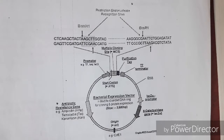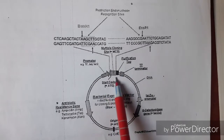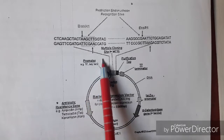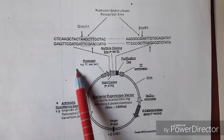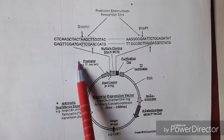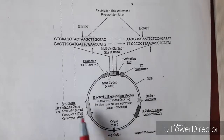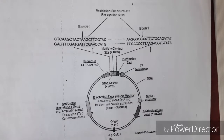Now looking at the diagram of an expression vector: the multiple cloning site region can be cleaved by different restriction endonuclease enzymes. The promoter is the main important component that leads to the expression of our desired gene — this is the major difference between a cloning vector and an expression vector. It also has a terminator, a lac region, an antibiotic resistance gene, and an origin of replication taken from ColE1, which is responsible for replicating the DNA in the bacterial machinery.